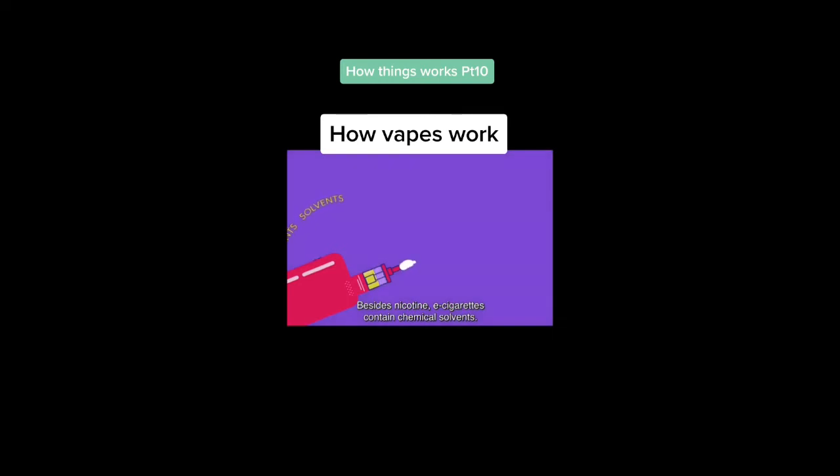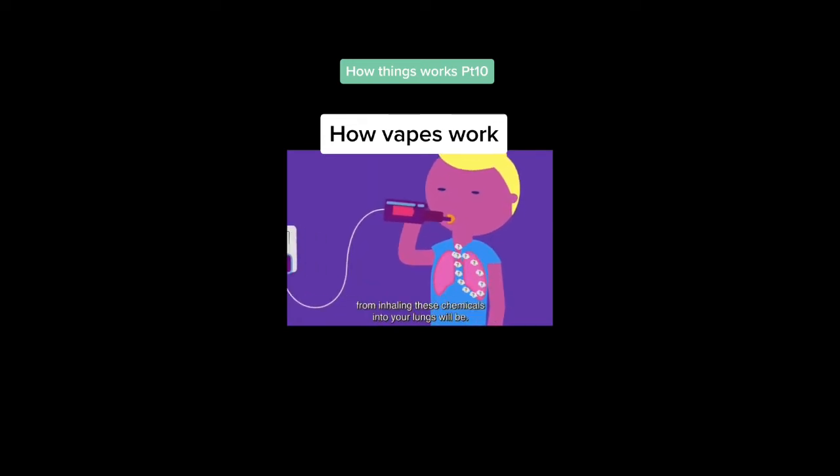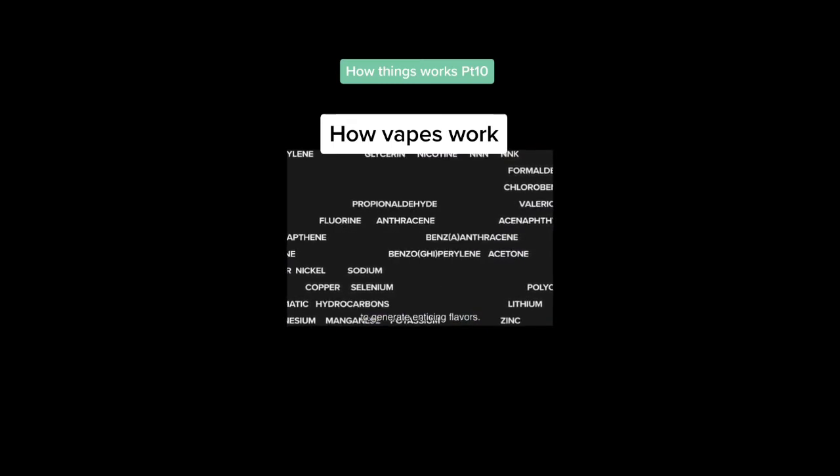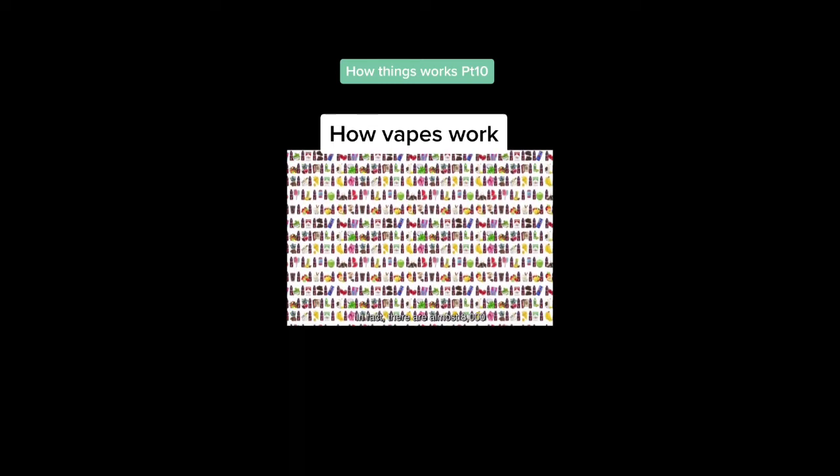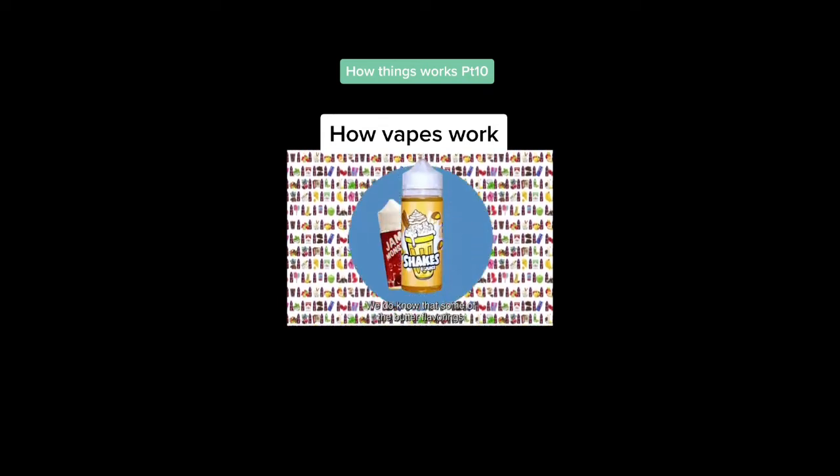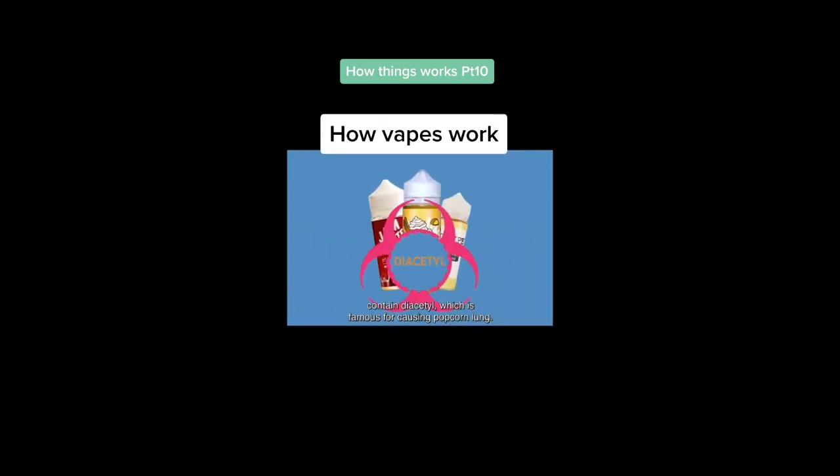Besides nicotine, e-cigarettes contain chemical solvents. When heated very high by some of the new e-cigarette devices, these solvents can be transformed into formaldehyde, which is a carcinogen. It causes cancer. These observations are concerning, but we really do not know what the long-term effects from inhaling these chemicals will be. E-cigs contain many other chemicals to generate enticing flavors. In fact, there are almost 8,000 different flavors available today, so we don't know very much about many of them. We do know that some of the butter flavorings contain diacetyl, which is famous for causing popcorn lung.